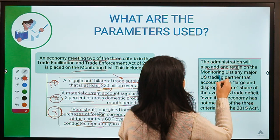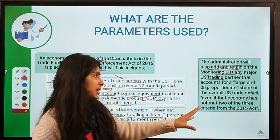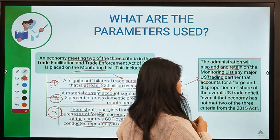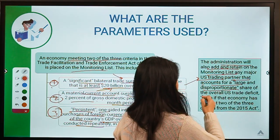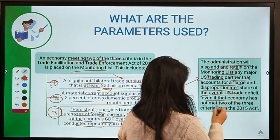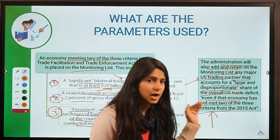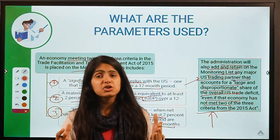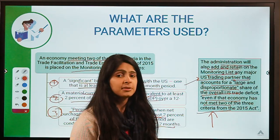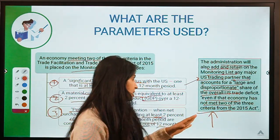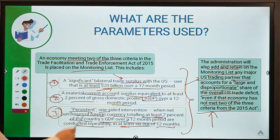The US administration may also add and retain on the monitoring list any major US trading partner that accounts for a large and disproportionate share of the overall US trade deficit, even if that economy has not met two of the three criteria. This means a country to which the US owes a lot in trade can be placed on the monitoring list regardless of the standard three parameters.